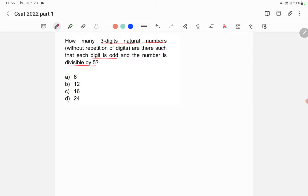So it says that all the digits of this number are odd. We can only use 1, 3, 5, 7, and 9—we can only use odd numbers. Now it's a three-digit number and the number is divisible by 5.